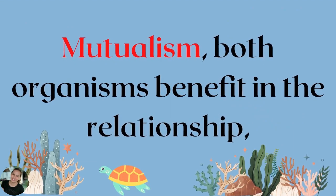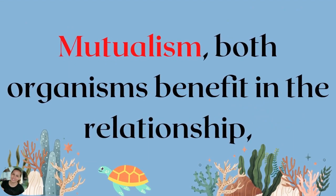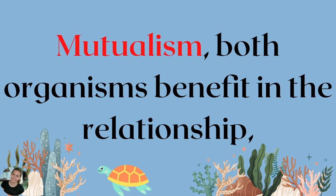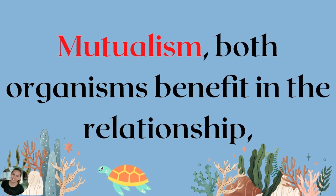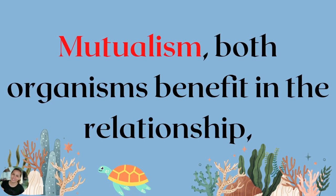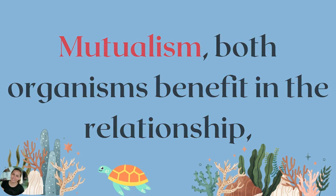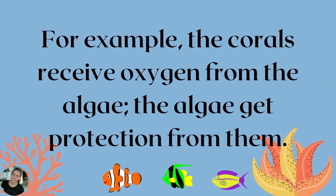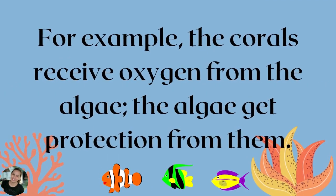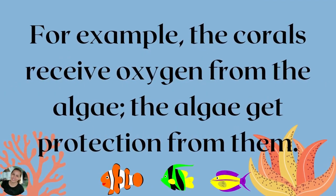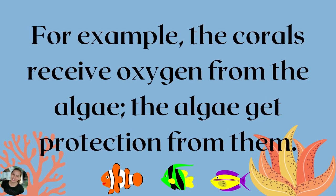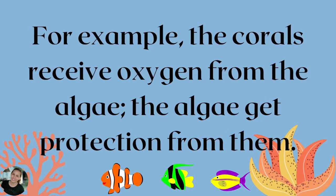The second one is mutualism. In mutualism, both organisms benefit in the relationship. For example, the corals receive oxygen from the algae, and the algae get protection from the corals.